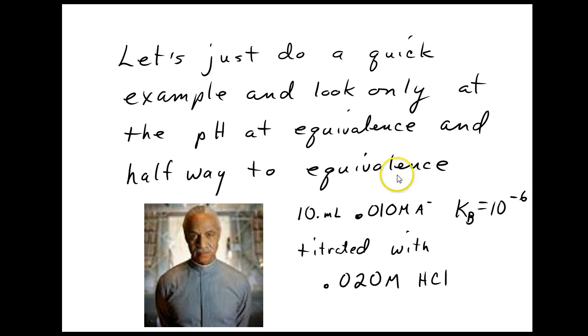Let's just do a quick example, and let's just look at a couple points today. Let's look at the pH at the equivalence point and halfway to the equivalence point. So let's just pretend that we're titrating 10 milliliters of 0.01 molar A minus, our favorite weak base. And Kb is 10 to the negative 6. We're going to titrate it with 0.02 molar HCl. I thought I would just make the concentrations different today to mix it up a little bit.